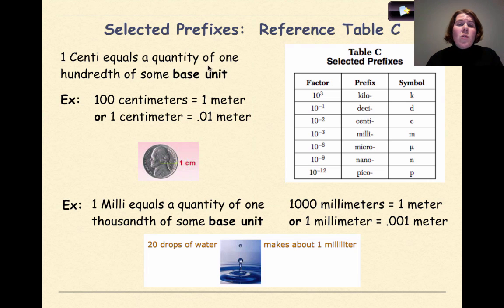One centi equals a quantity of one hundredth of some base unit. So centi tells us something that's less than one, and centi is another common prefix that we commonly use in chemistry. So a hundred centimeters is equal to one meter, or one centimeter is equal to one hundredth of a meter. So if we look at this image of this nickel right here, the radius is one centimeter, or one hundredth of a meter.